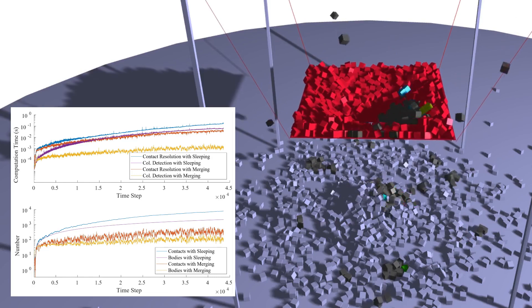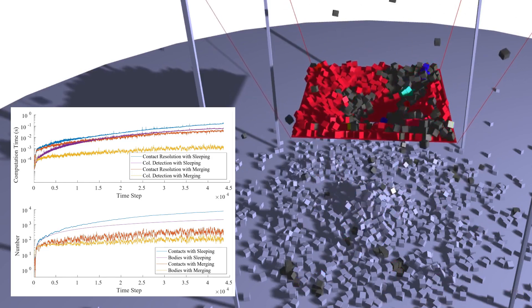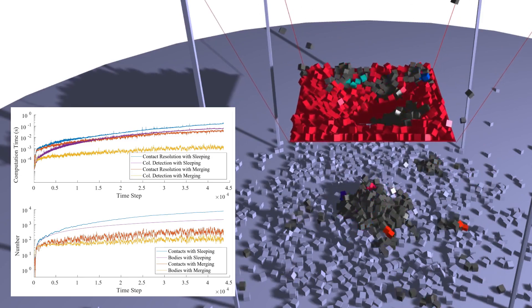This provides a valuable speed-up for large-scale simulations. In this example, adaptive merging reduces the computation by an order of magnitude thanks to a greatly reduced number of bodies and contacts.